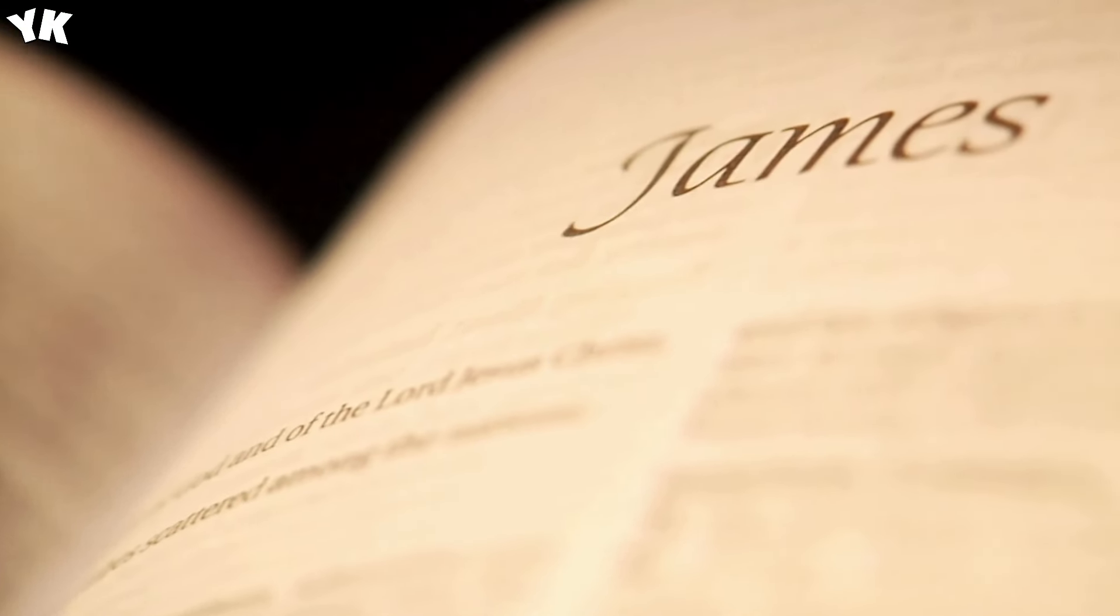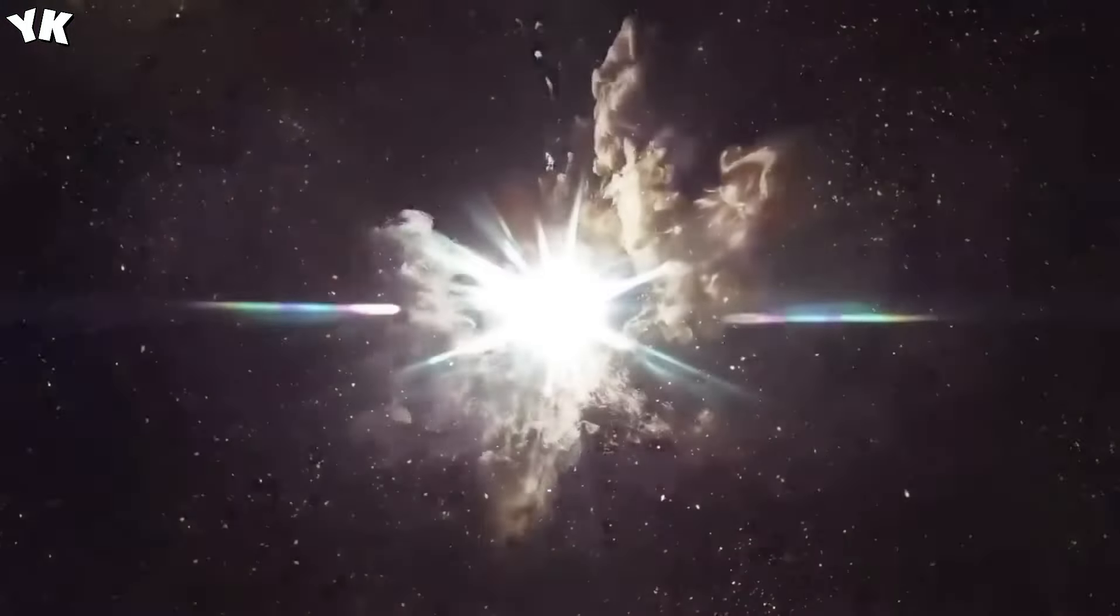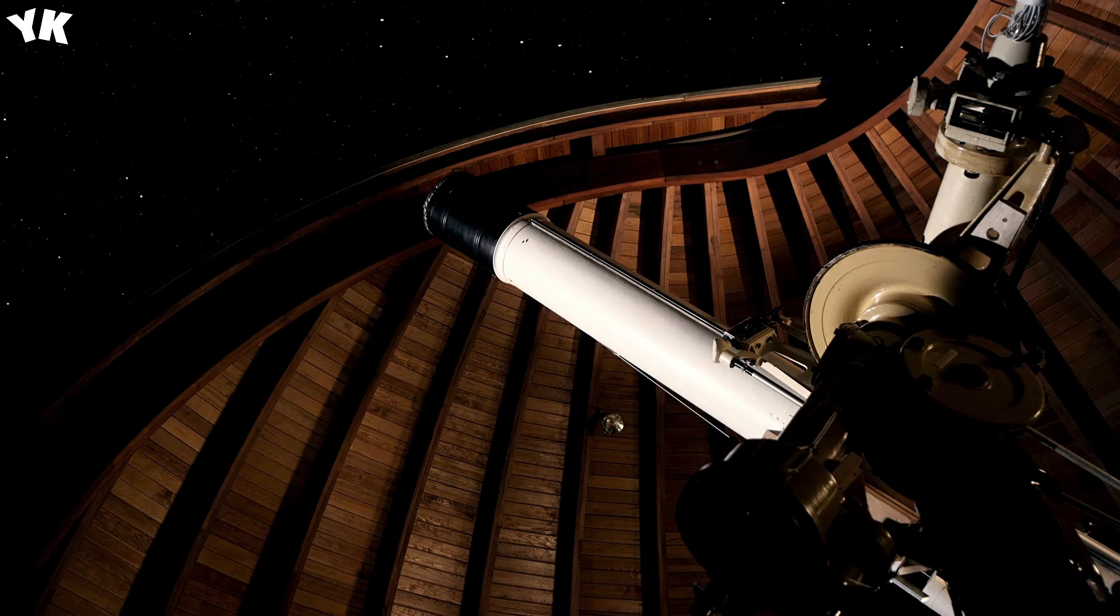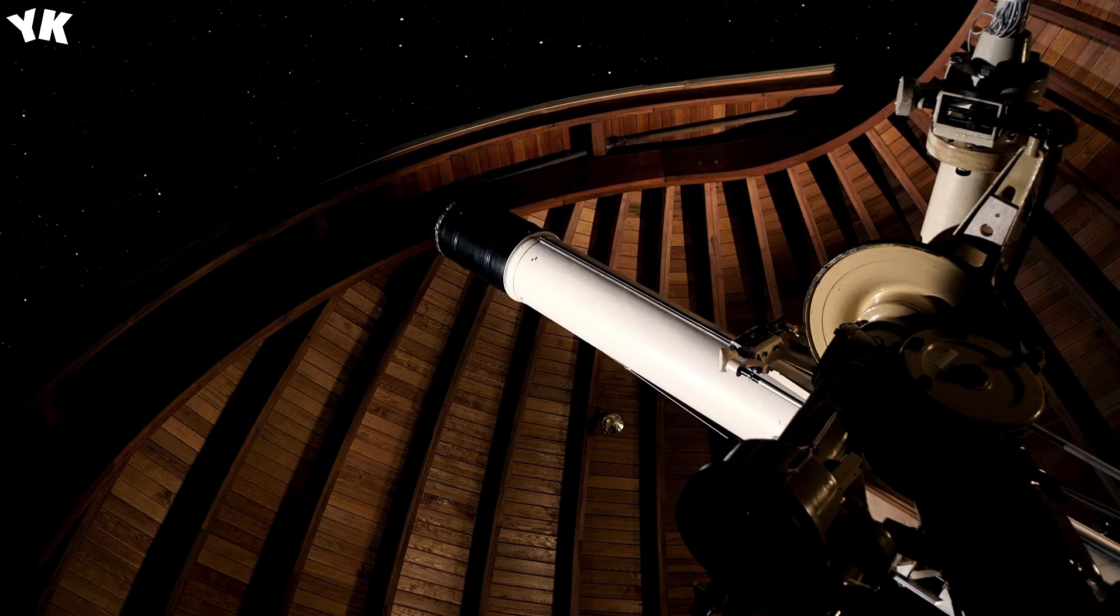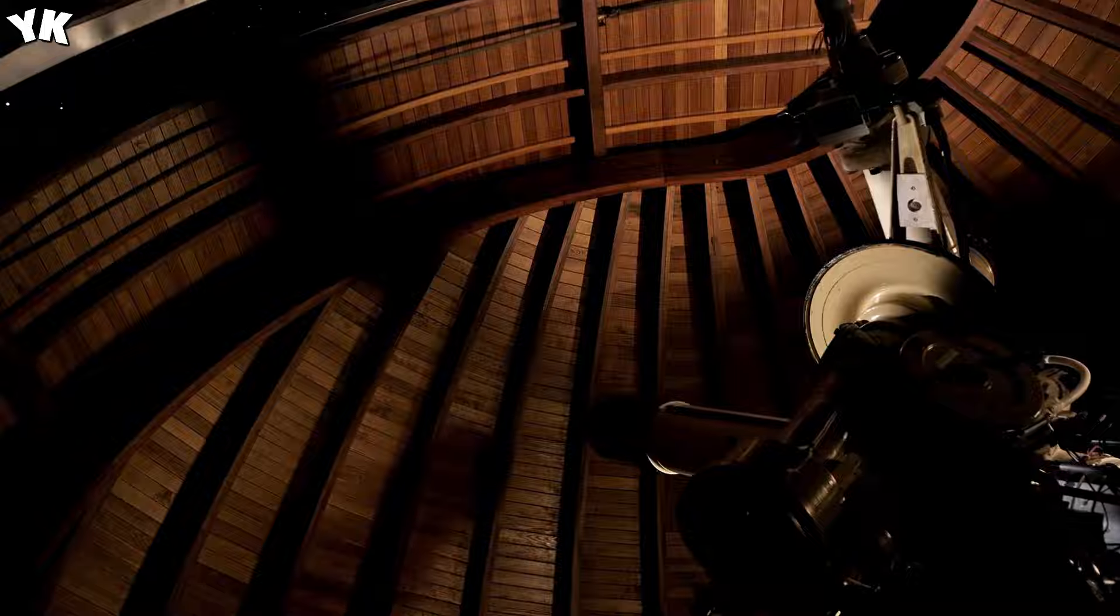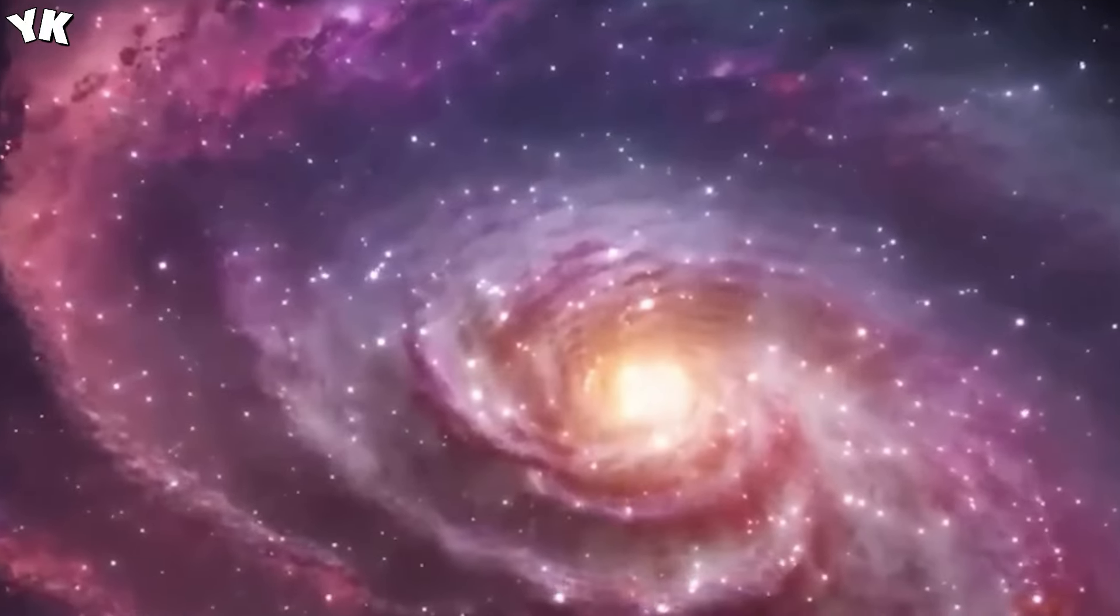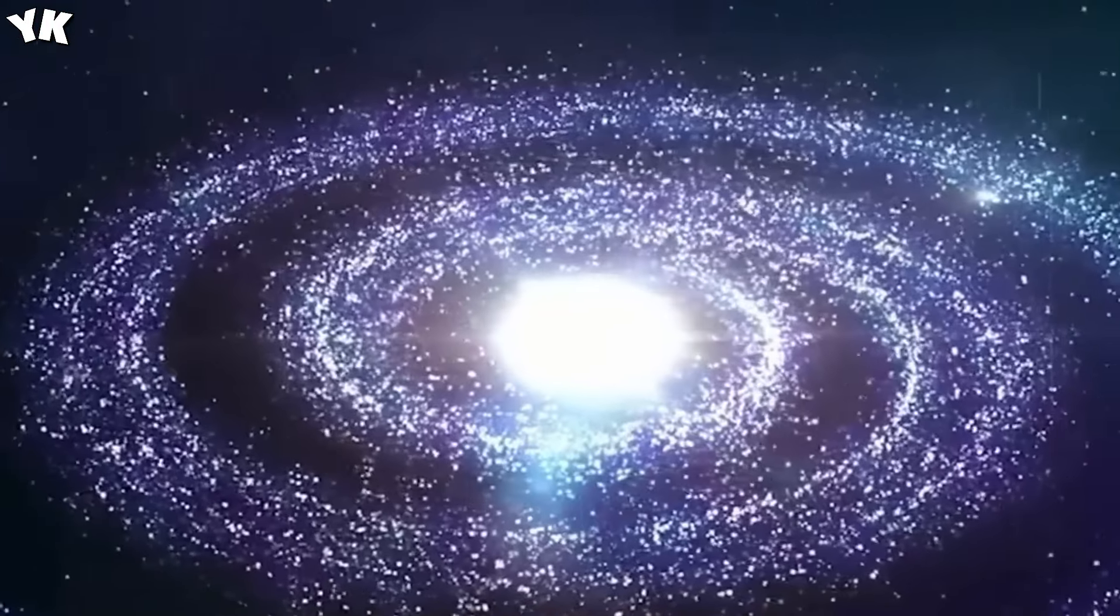Even Voyager 2's close-up visit to the planet didn't reveal these faint dust rings. The JWST image unveiled previously unknown rings, expanding our understanding of Neptune's ring system. In contrast to the characteristic blue color associated with Neptune, the image captured by the JWST didn't showcase this hue. The absence of blue was intentional, as the JWST observed Neptune in near-infrared light. Methane present in Neptune's atmosphere absorbs light strongly at these wavelengths, causing the planet to appear somewhat dark to the JWST, except for the areas covered by bright high-altitude clouds.